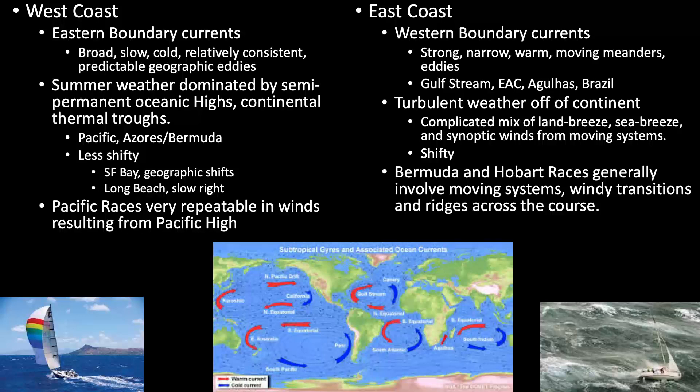Eastern boundary currents have eddies, but for the most part they're geographic and tend to be quite repeatable. On the east coast of continents, you have western boundary currents — on the western side of the oceanic basins. These tend to be strong, narrow, and warm, with moving meanders and moving eddies. Examples I've navigated include the Gulf Stream, the East Australia Current — a huge factor in the Sydney Hobart — the Agulhas and Brazil currents, and the Kuroshio Current.